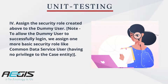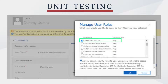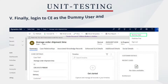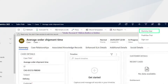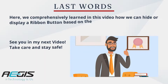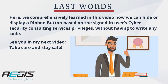Fourth, assign the security role created above to the dummy user. Note: to allow the dummy user to successfully log in, we assign one more basic security role like Common Data Service User, having no privilege to the case entity. The fifth step is finally to log in as the dummy user and verify if our custom button Under Review is hidden. Here we comprehensively learned in this video how we can hide or display a ribbon button based on the signed-in user's security privileges without having to write any code.